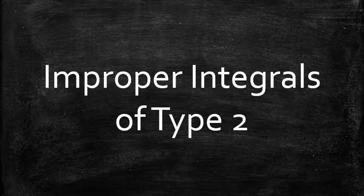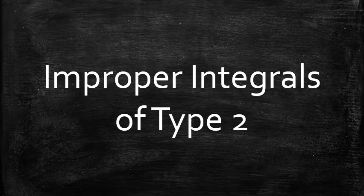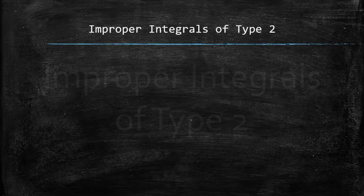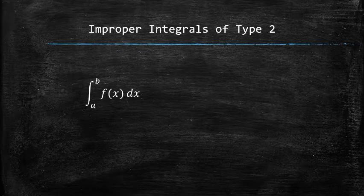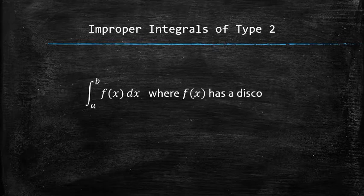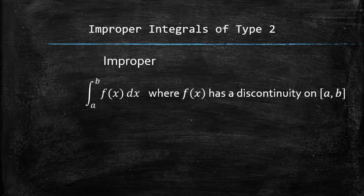Next, we will discuss the improper integrals of type 2. First, let's recall that the integrals in which the integrands have a discontinuity on the interval of integration are called the improper integrals of type 2.